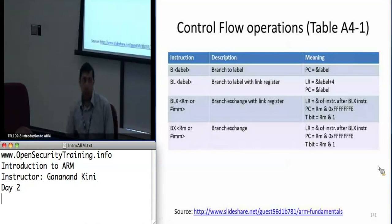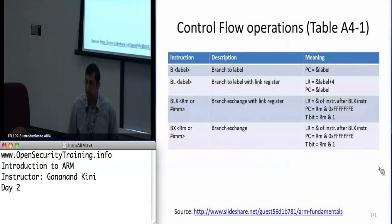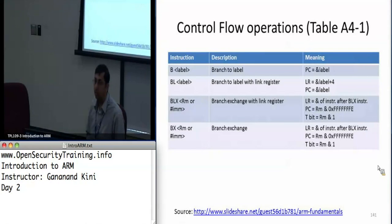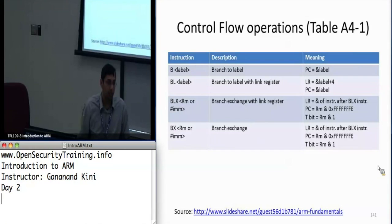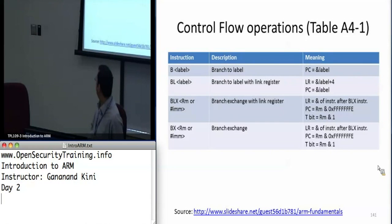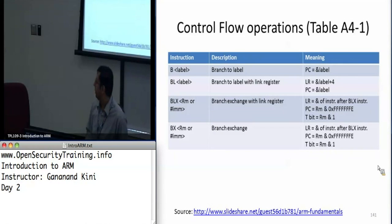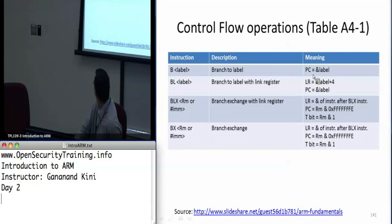I wanted to go into a little bit more detail on branching and the difference between the mode change. I had mentioned yesterday that in the ATPCS manual included in your references, it says that you can actually initiate a mode change by setting the least significant bit of the address that you want to branch to, and that's sort of what I'm showing here.